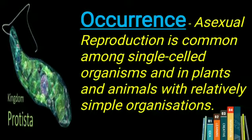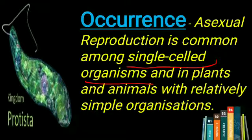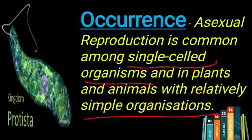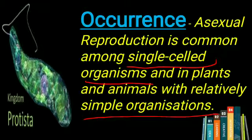Regarding occurrence, asexual reproduction is common among single-celled (unicellular) organisms and in plants and animals with relatively simple organization — those whose body organization is very simple with no complexity. For example, Protista and Monera kingdoms. Note that it is not that all single-celled organisms have only asexual reproduction; in the majority of cases asexual reproduction is involved, but some single-celled organisms do have sexual reproduction as well.